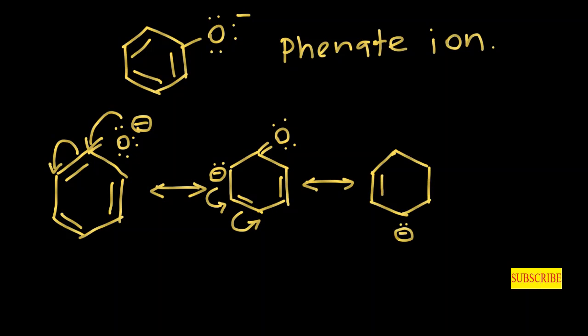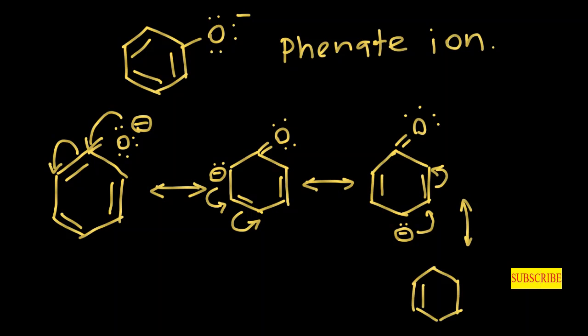In the third structure, there is a lone pair of electrons and the pi bonds in the ring are unchanged. For the fourth resonance structure, this lone pair of electrons jumps onto the next carbon and the pi bond changes to a lone pair of electrons on the very next carbon. This is our fourth resonance structure.